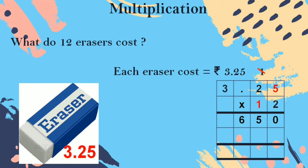Then move on to the tens place number. Before you start the tens place multiplication, what you should do, children? Yes, correct — you put 0 in the ones place. After that only, you do the multiplication. Start with tens place number: 1 five is 5, 1 two is 2, 1 three is 3. After finishing your multiplication, you do the addition.